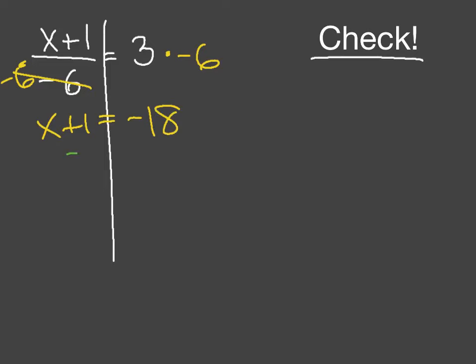To get the x by itself, I need to get rid of the plus 1, so I'm going to subtract on each side. And I'm finding that x equals negative 19.